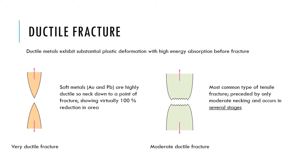Ductile metals exhibit a lot of plastic deformation before they fracture. Very soft metals like gold or lead are incredibly ductile - you can stretch them quite a lot before they break, showing an almost 100% reduction in area. You can also gain what we call a moderate ductile fracture, which is the most common type of tensile fracture for metals and their alloys. Here you gain only very moderate necking - a reduction in area as you apply tensile stress to the material - and this moderate ductile fracture occurs in several stages.